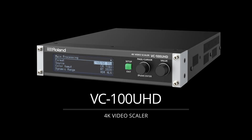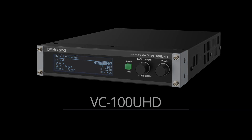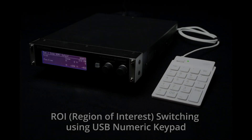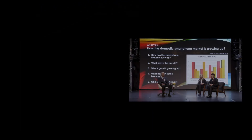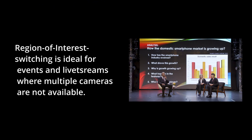The VC100UHD is a video scaler designed for 4K and HDR workflows. The VC100UHD's region of interest can now be controlled and switched using a USB numeric keypad. Region of interest switching is ideal for events and live streams where multiple cameras are not available.